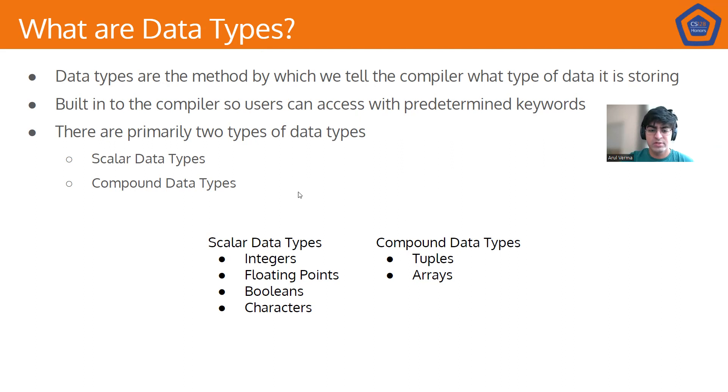Conceptually, all you really need to understand is that scalar data types, like integers, floating points, booleans, and characters, are all singular data types. They only take in a single value and store a single value. Whereas compound data types store multiple values, tuples and arrays both store complex and various amounts of data, which allows you to access various amounts of data at the same time.